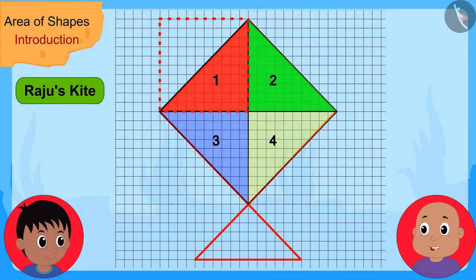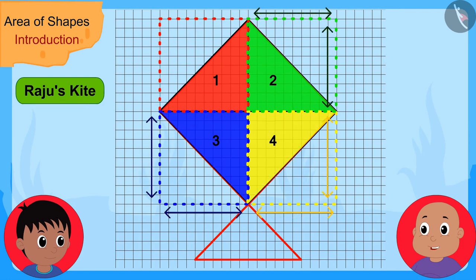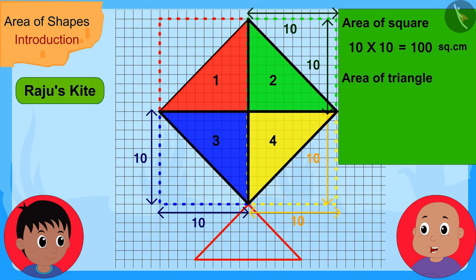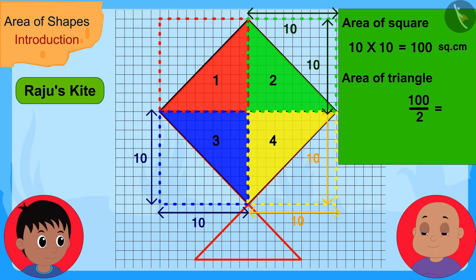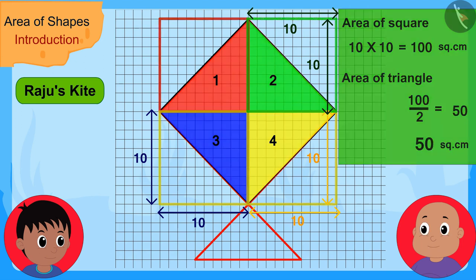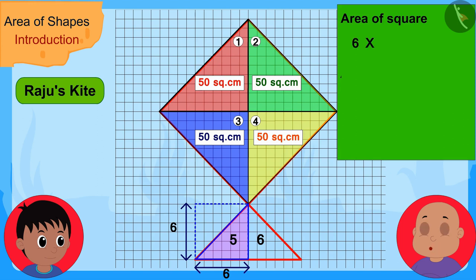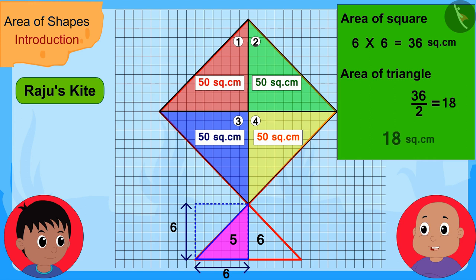In exactly the same way, these three triangles are also half of these three squares. The area of these three squares is also 10 times 10 or 100 square centimeters. Therefore, the area of these three triangles are also 50 square centimeters each. Now, this lower small triangle is half of this square. The area of this square is 6 times 6 or 36 square centimeters. So, the area of this small triangle will be 36 divided by 2 or 18 square centimeters.